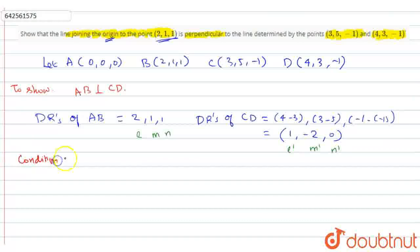The condition for two lines to be perpendicular is LL' + MM' + NN' = 0. If the product is 0, then AB will be perpendicular to CD. Now let's check whether they are perpendicular or not.